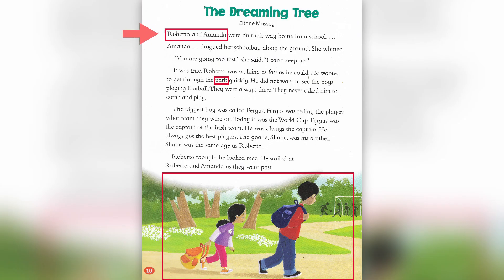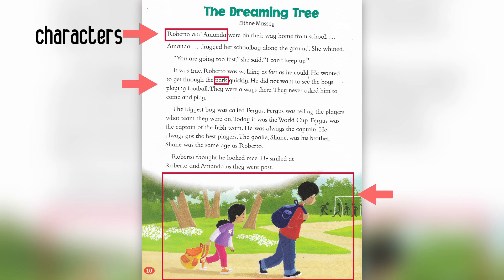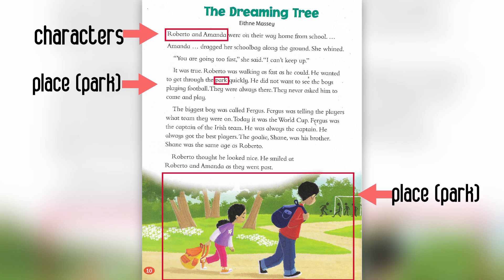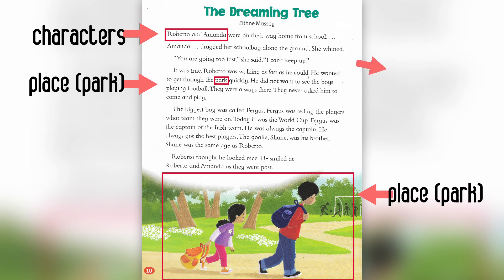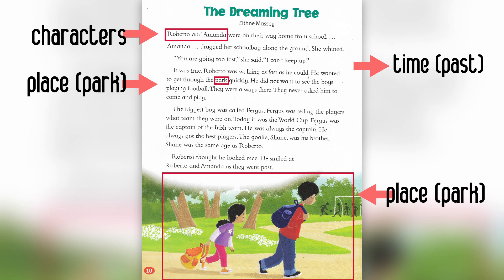Let's take a look at the story, The Dreaming Tree. If you pay attention, at the beginning we find the characters, because it says Roberto and Amanda. We can also find the place, which is in the park — you can take a look at the word 'park' there, and also in the picture. And finally, we can see that it's in the past, because all the verbs are in simple past.